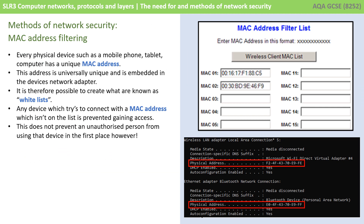The final method of network security is MAC address filtering. Every single physical device, whether it's a mobile phone, a tablet, a PC or a printer, has a unique MAC address. This is different to an IP address — a MAC address is universally unique and is actually embedded at the manufacturing stage into the device's network adapter. It's therefore possible for network managers to create what's known as whitelists. MAC addresses are added to this whitelist, and any device which tries to connect with a MAC address that isn't on the list is prevented from gaining access.